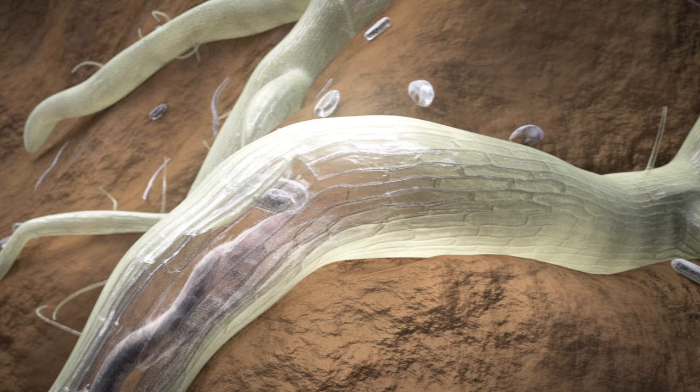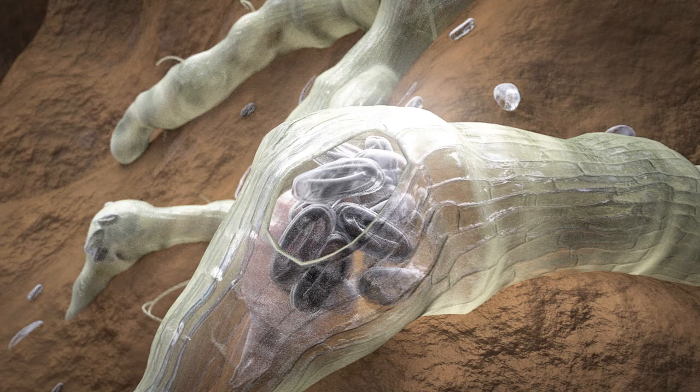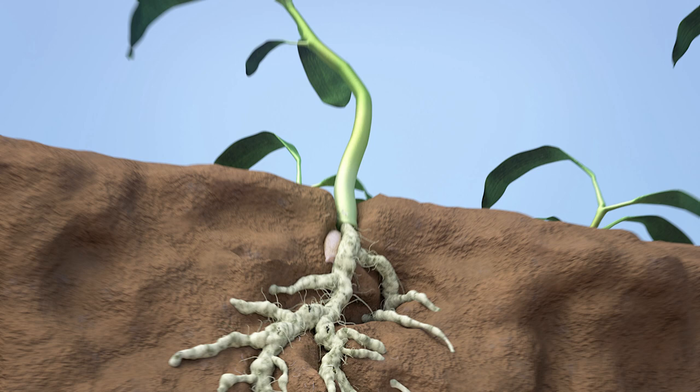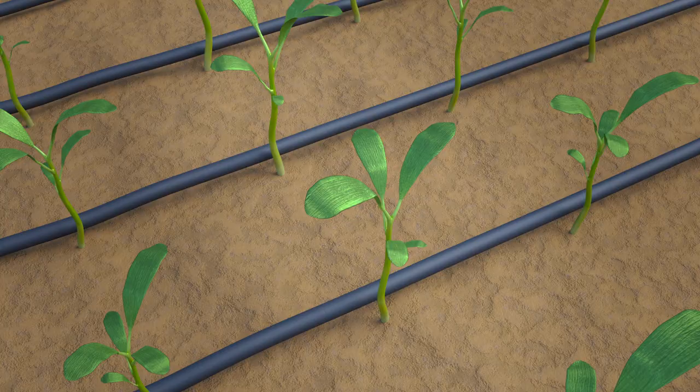Nematodes penetrate the root, start to reproduce, and cause root galling. They suck water and nutrients from the root system. Infested plants suffer and show poor growth.